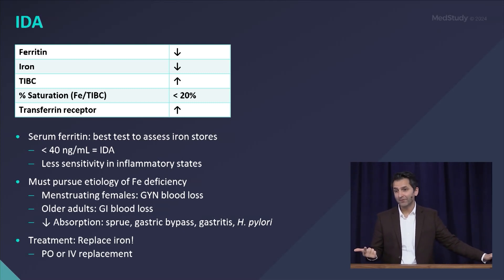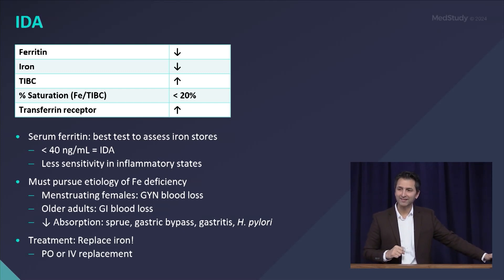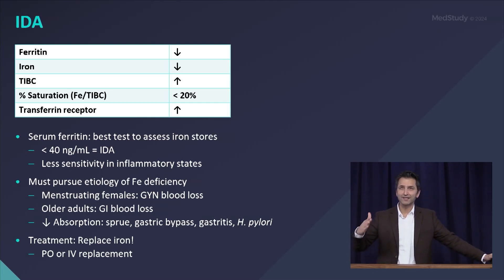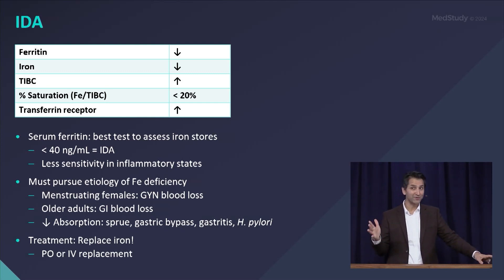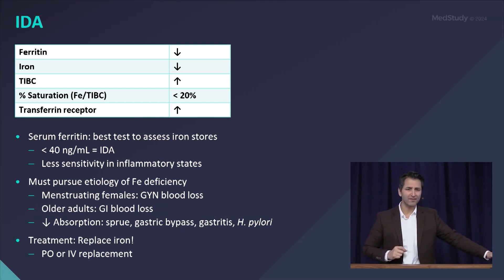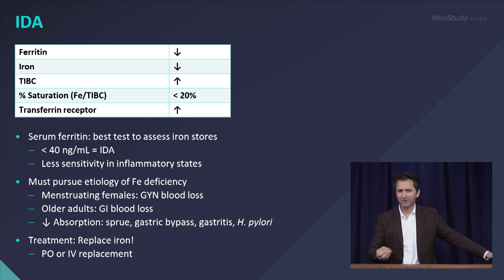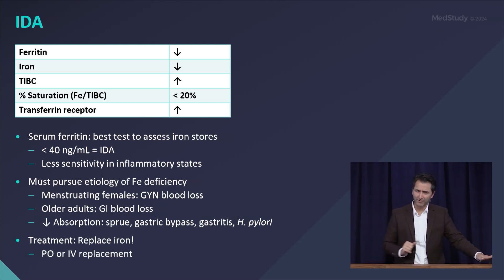IV iron is used for patients who don't respond to oral iron, have very poor tolerance to oral iron even when dosed correctly, or have severe symptomatic anemia where you want to reduce transfusion requirements and can't wait the two to three months for oral iron to take effect — IV iron averages two to three weeks. The newer IV iron preparations are much safer; older preparations like iron dextran had high incidences of hypersensitivity reactions, but those are now very rare.